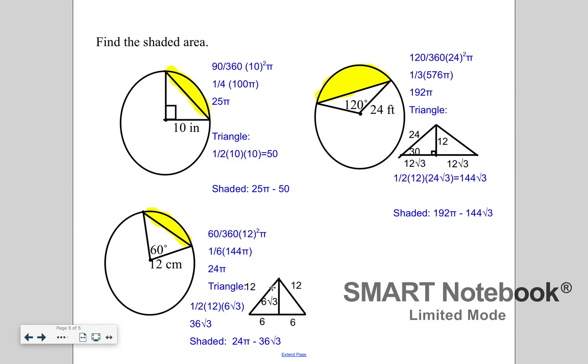So that means this angle in here is 30 when I drop the altitude because I took the 60 and split it in half with the altitude. This is 60. I was given that this hypotenuse was 12, so the side across from the 30. So the 30 degree angle is up here now. The side across from the 30 is half of 12, which is 6. The side across from the 60 is 6 root 3.